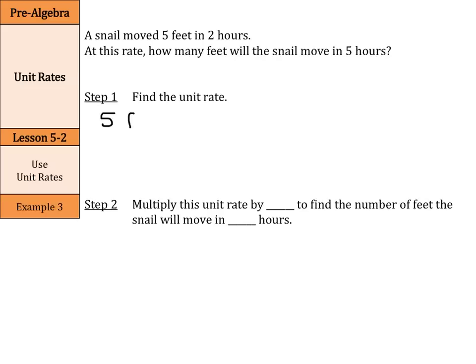So, if we're going 5 feet in 2 hours, how far is this in 1 hour? Well, divide by 2 on top and bottom, and 5 divided by 2 is 2.5 feet per hour. So, we're going to multiply this unit rate of 2.5 feet per 1 hour by 5 to find the number of feet the snail will move in 5 hours.